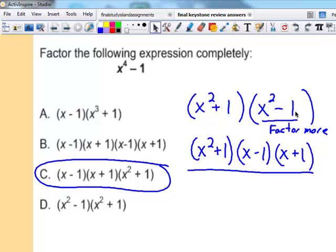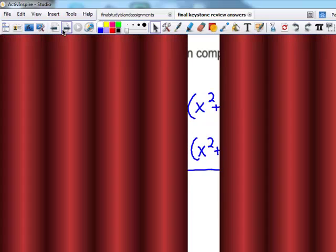But then this piece is still a perfect square minus a perfect square, and I can factor more. So make sure you select the one that is factored fully.